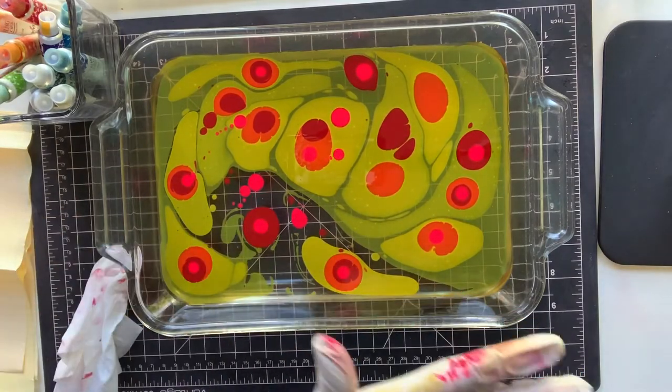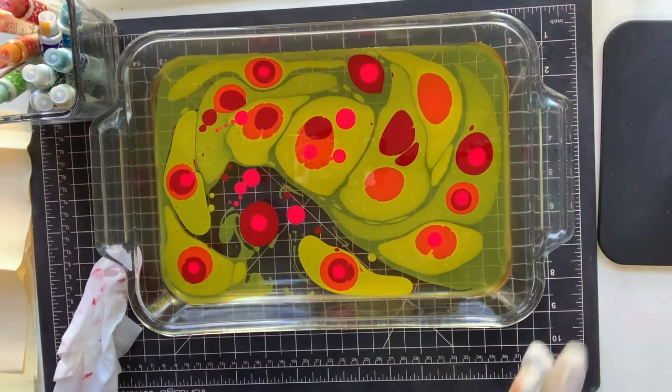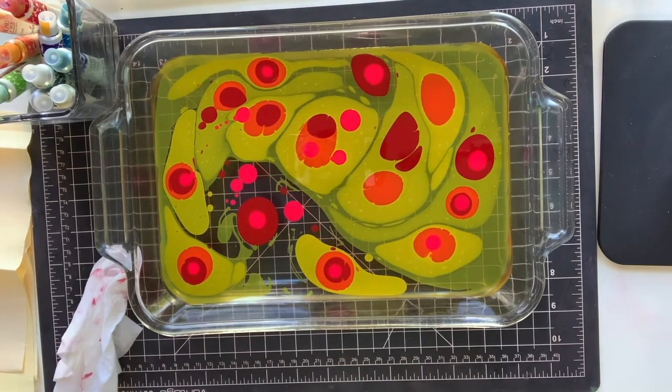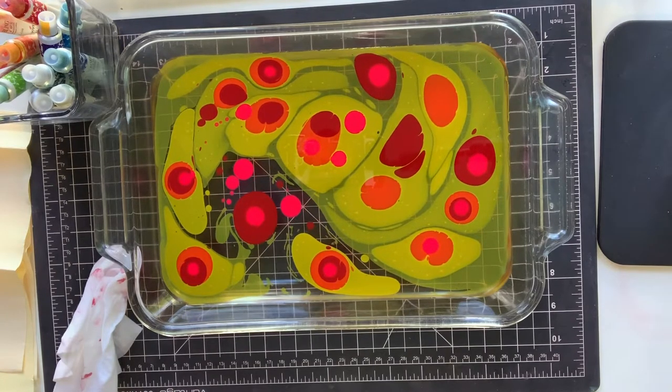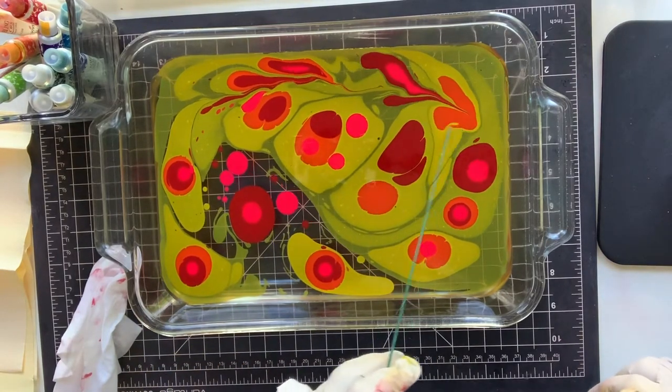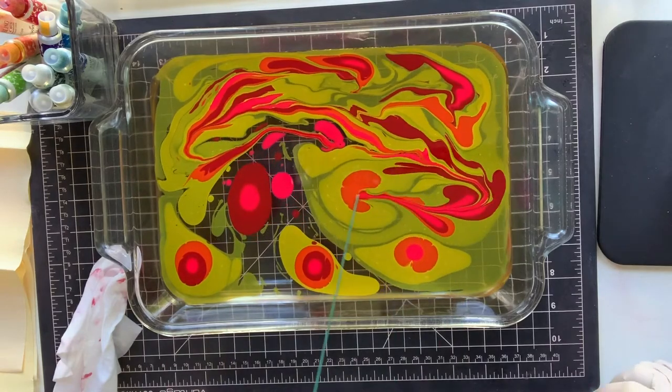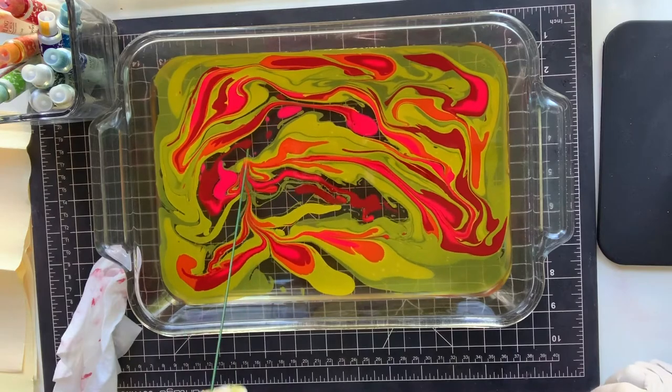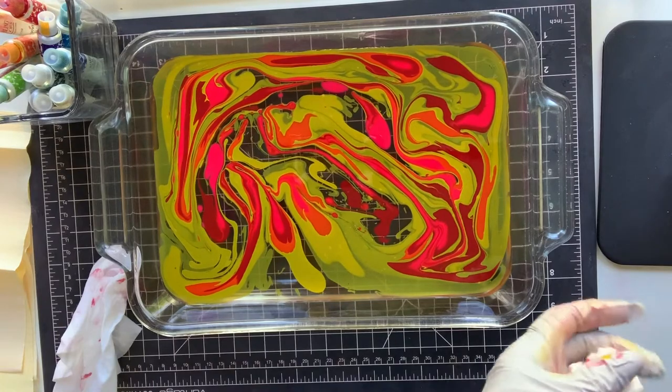I'm going to clean off my hands. I'm going to grab a wire and I'm just going to run my wire through here to create kind of a paisley pattern. Set that off to the side.